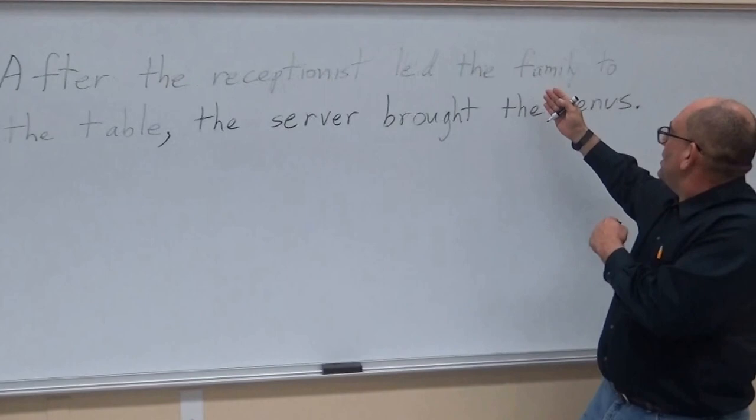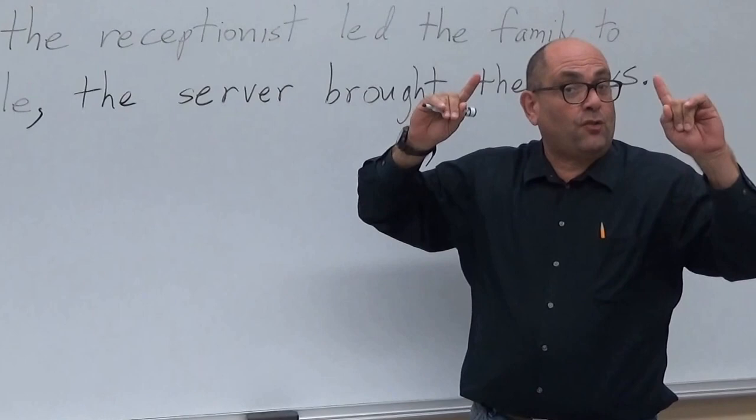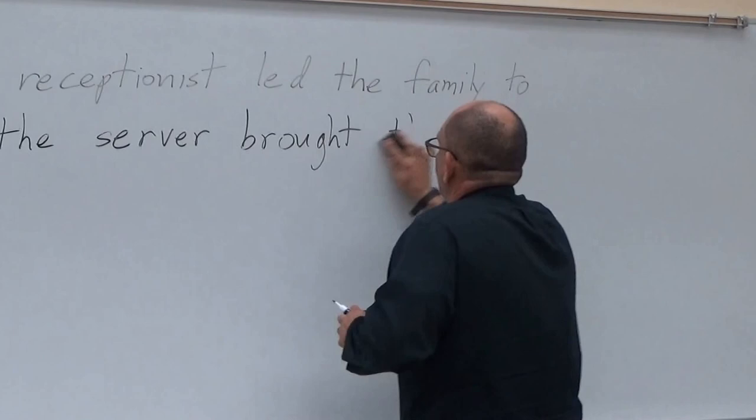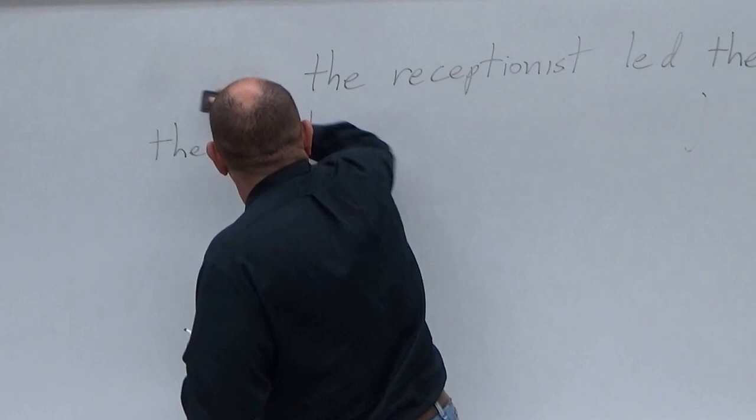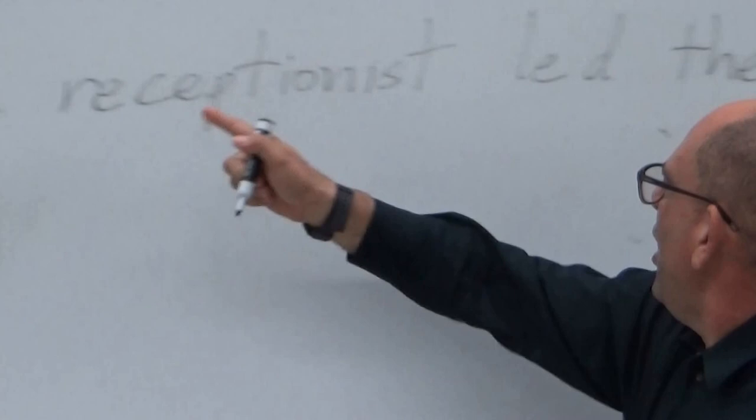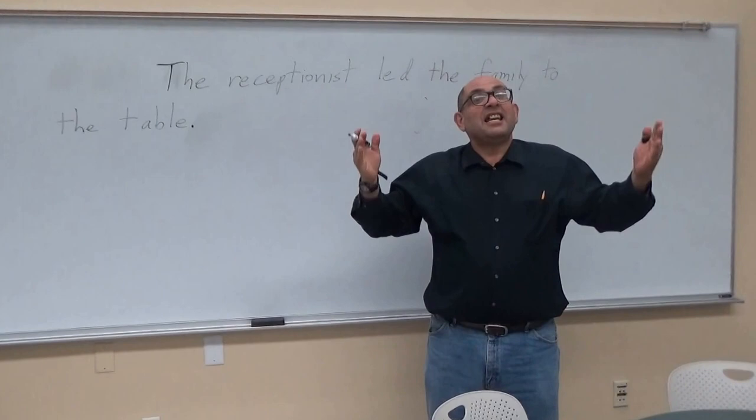Now there are other ways to fix or correct this sentence fragment — other superglues, if you will. If we want to simply express a statement of fact and just say that the receptionist led the family to the table, all we have to do is get rid of the word 'after.' I put a capital T and I say 'The receptionist led the family to the table.' Is that a complete sentence? Yes, it is. That is no longer a sentence fragment.